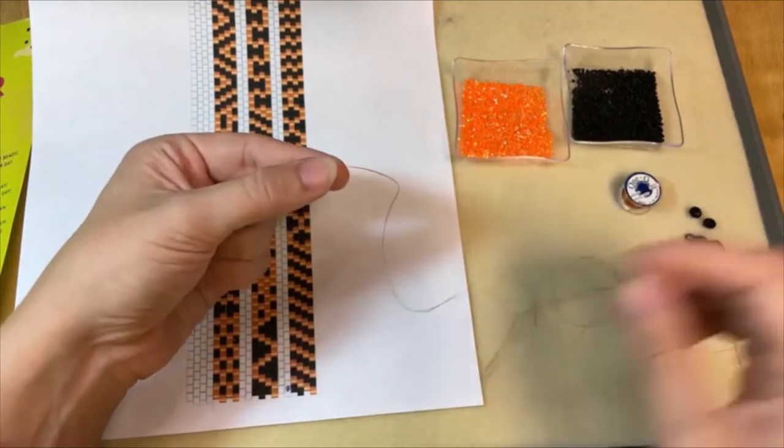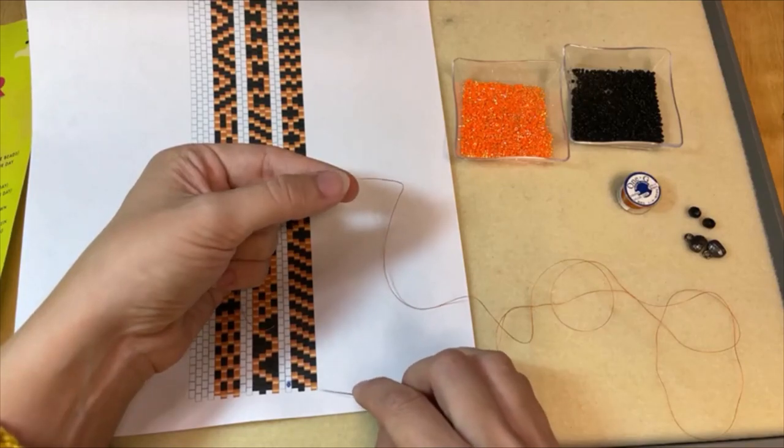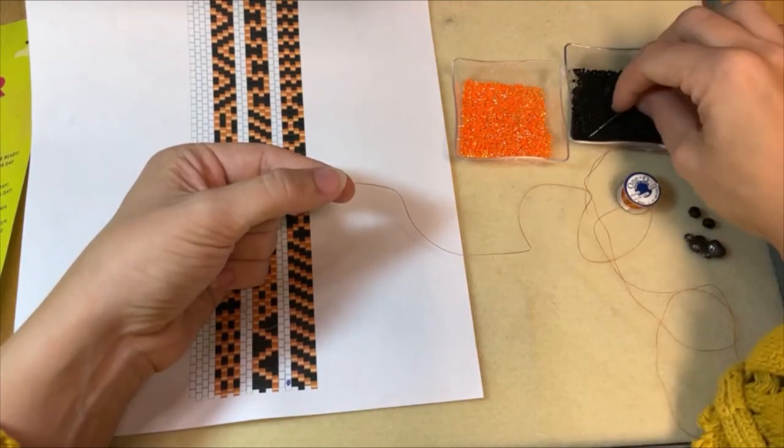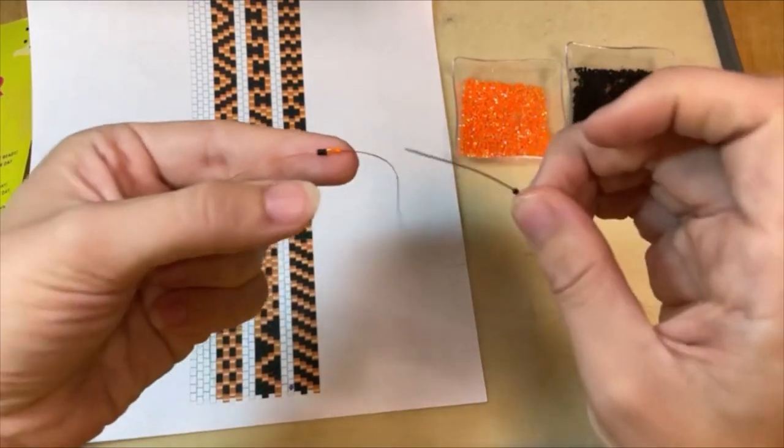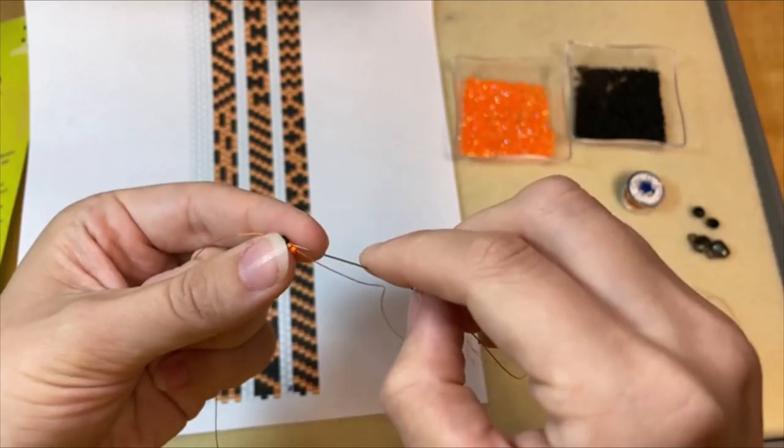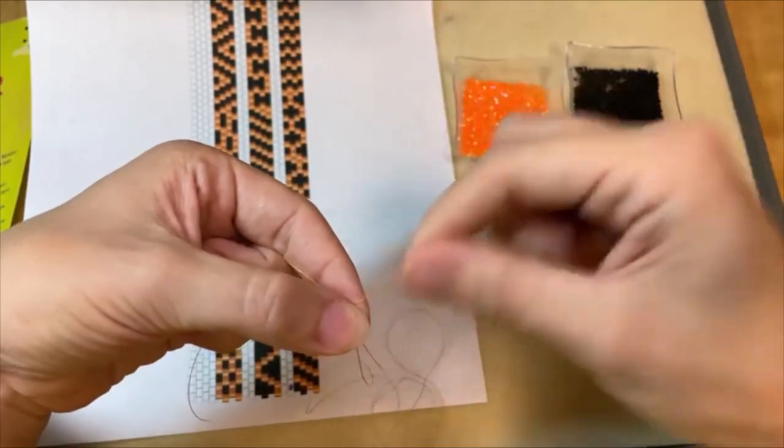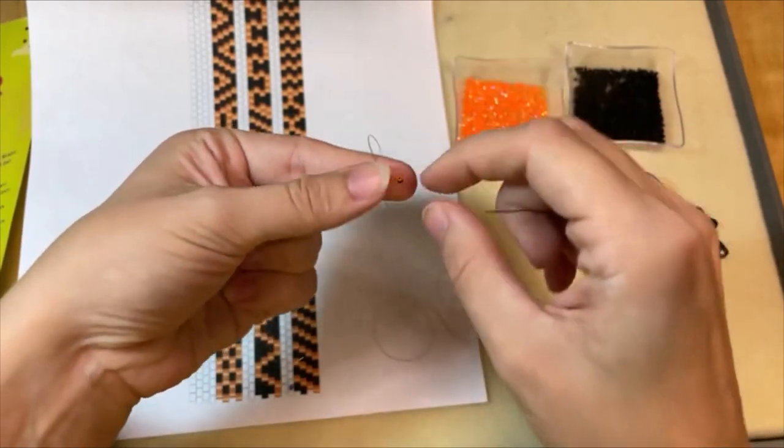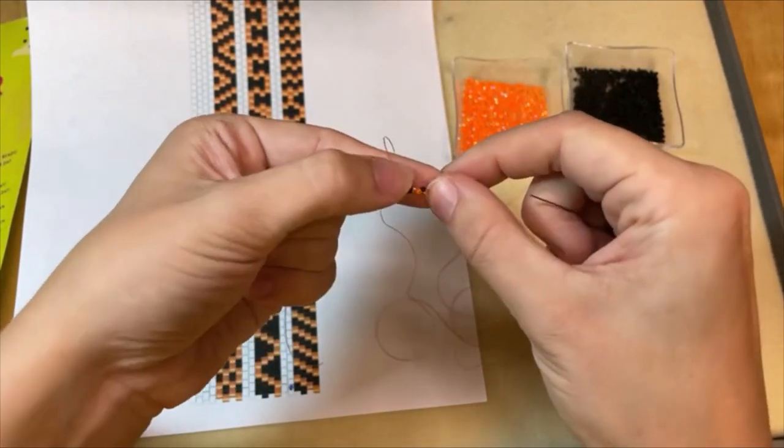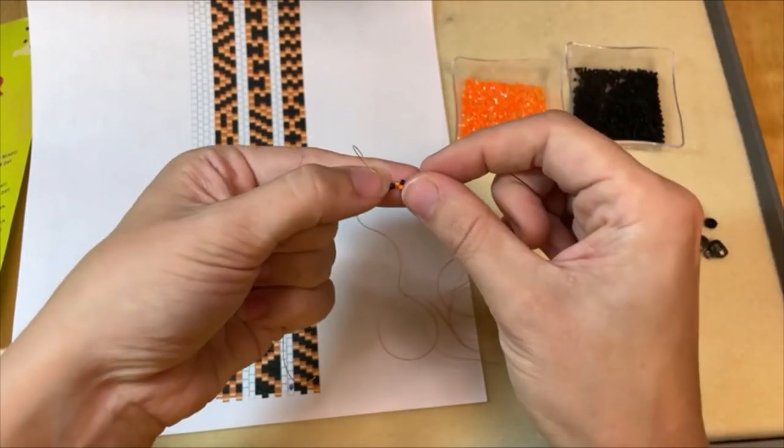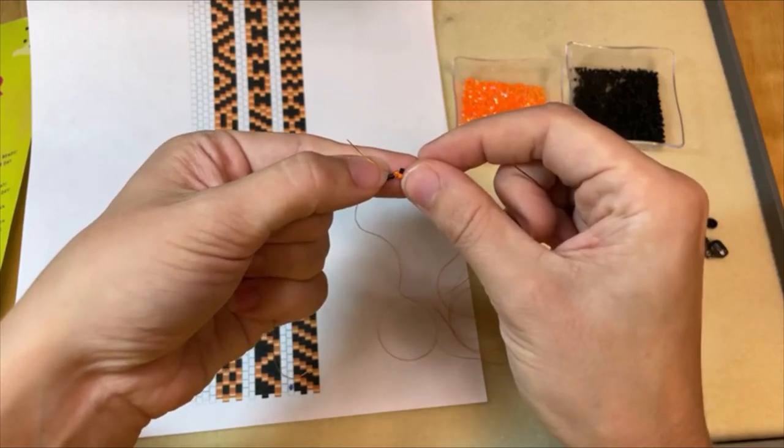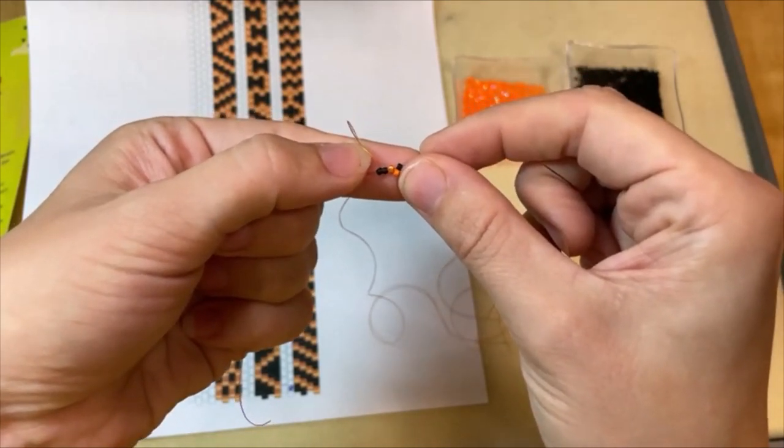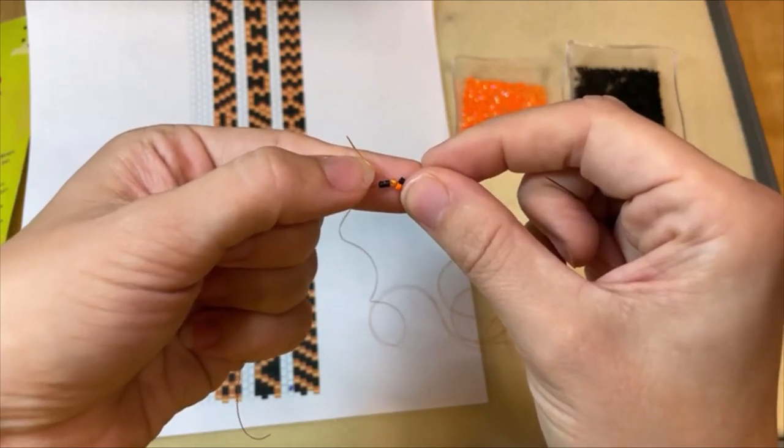Okay so I've got those first two rows here. My next row starts with a black bead so I'm going to add a black bead here and then you're going to skip over that last orange bead and then go through the next bead on the row. That black bead will be sitting right on top of that last orange bead. The first few rows are a little squirrely as you get everything lined up. That black bead will fall right on top of that first orange bead and now your thread is coming out of the second orange bead.